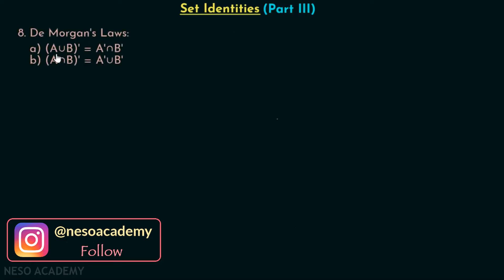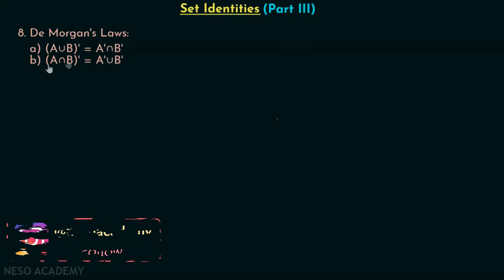Under this category, we have two laws. First: A union B complement is equal to A complement intersection B complement. Second: A intersection B complement is equal to A complement union B complement. We have to prove these laws one by one. They are very important for us to understand.